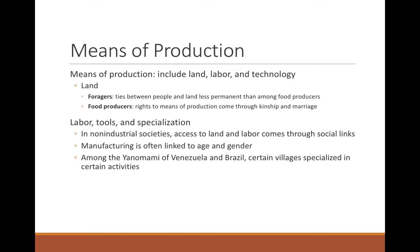For food producers, rights to the means of production — land, water, and labor — are mediated through social obligations and social ties. One of the biggest ways to convert acquaintances into friends is to facilitate a marriage uniting your groups. In small-scale societies, kinship and marriage provide general social bonds, and economic exchange helps make that marriage happen.